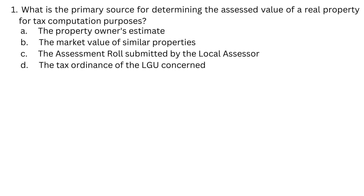Number 1. What is the primary source for determining the assessed value of a real property for tax computation purposes? A. The property owner's estimate. B. The market value of similar properties. C. The assessment role submitted by the local assessor. D. The tax ordinance of the LGU concerned.